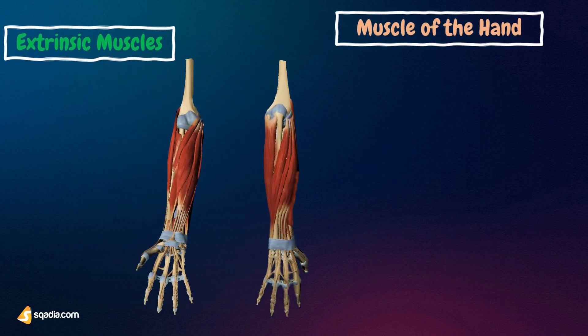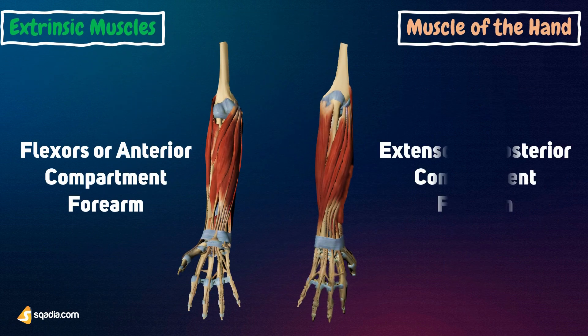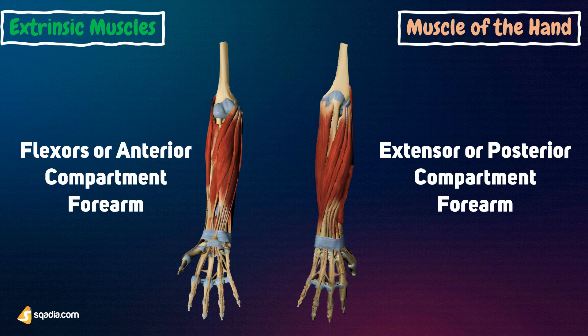In our previous video on the upper limb forearm, we discussed the flexor and extensor compartment muscles. These muscles originated from the humerus, the common flexor tendon, or the common extensor tendon. Their insertion, however, was at the wrist, at the flexor or extensor retinaculum, or the bones of the hand.